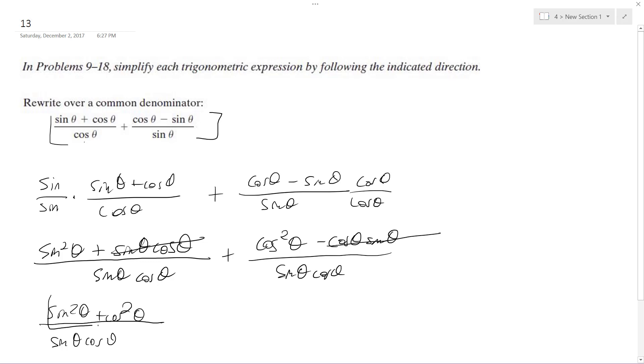So this is a trig identity. When you have sine squared plus cosine squared theta, it's just equal to 1. So our final solution is just 1 over sine theta cosine theta.